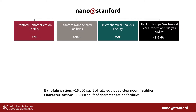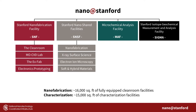We are comprised of four facilities: SNF, SNSF, MAF, and SGMA, that offer a large variety of nanofabrication and characterization instrumentation. SNF and SNSF are the two largest facilities and both have four core thrusts. They host complementary and overlapping capabilities, while MAF and SGMA are focused on a single instrumental technique.